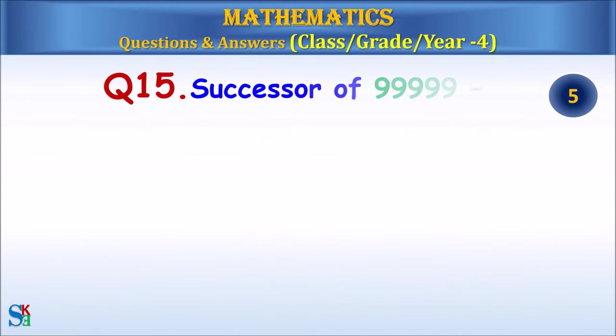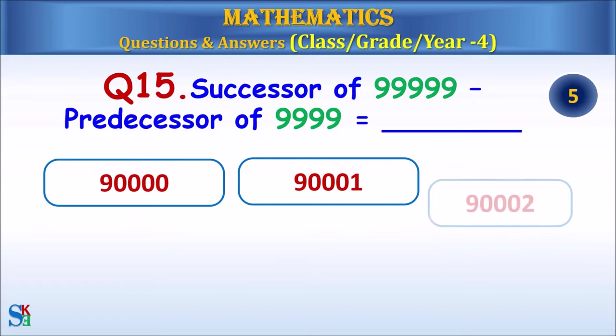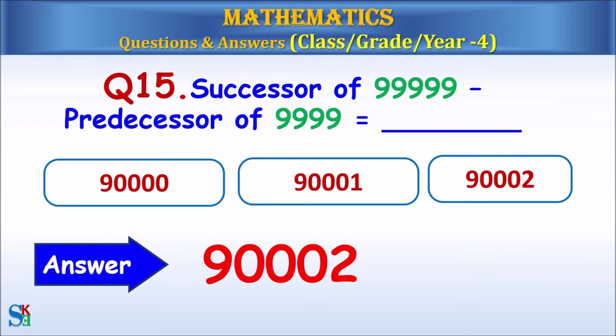Question 15: The successor of 99,999 subtract the predecessor of 9,999 equals? The answer is 19,002.